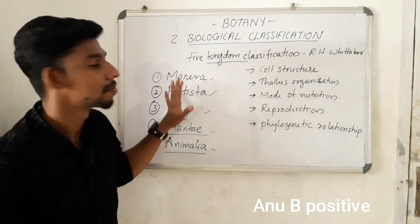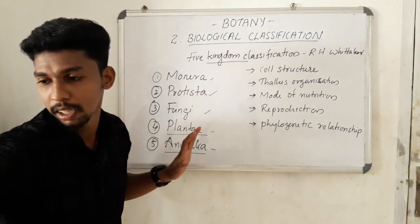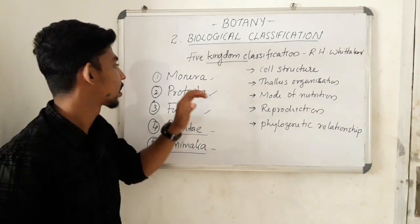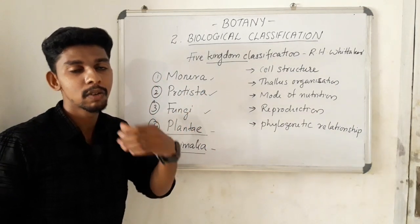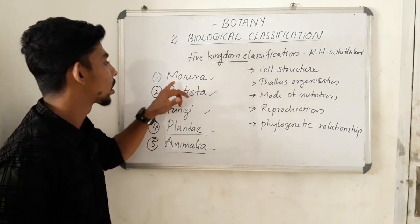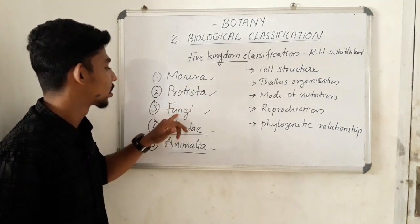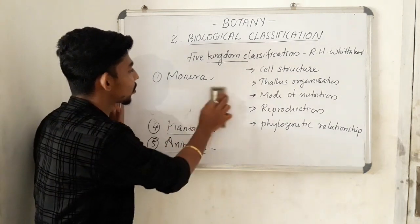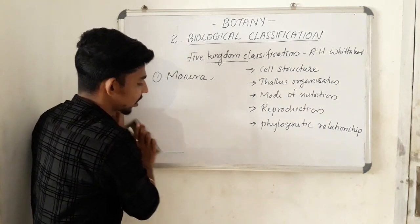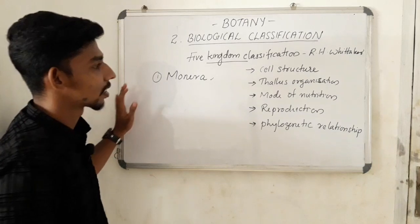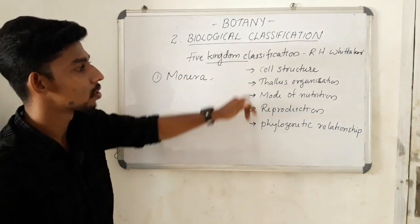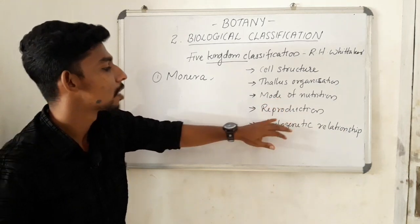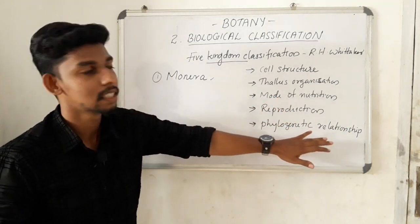We will now study Kingdom Monera. The classification criteria are: cell structure, thallus organization, mode of nutrition, reproduction, and phylogenetic relationship. These are the main characters used to classify Kingdom Monera.